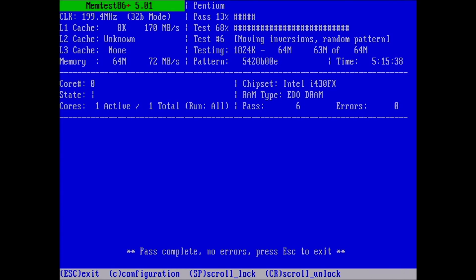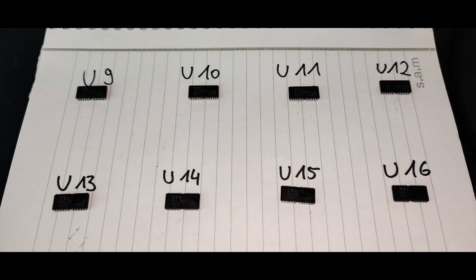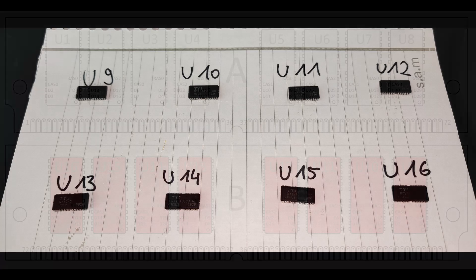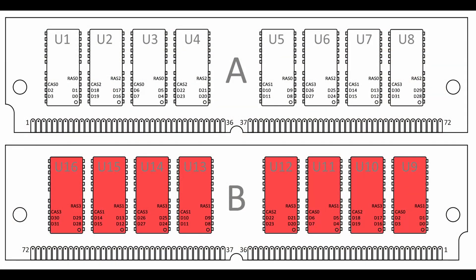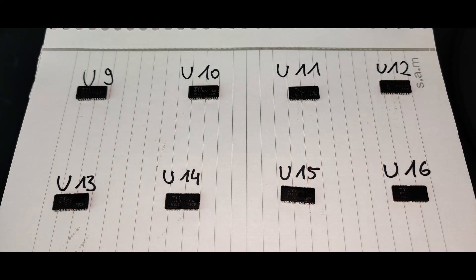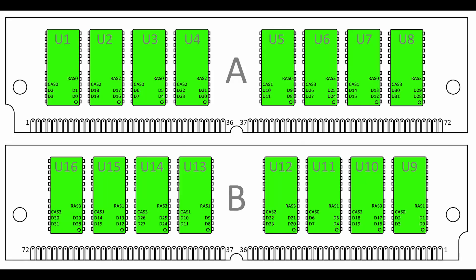This means the faulty chip has to be part of the chips I have removed in the previous video. So it is one of the chips among U9 to U16 which were located on side B. All my predictions were wrong. Since we now know that the faulty chip is one of those chips, we can split those 8 chips again into 2 groups of 4 each. I will be replacing the chips on spots U9 to U12 with their original chips.